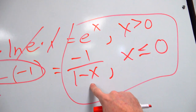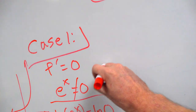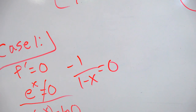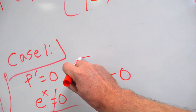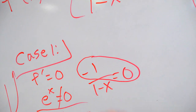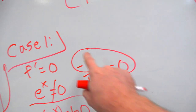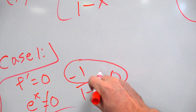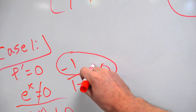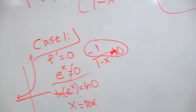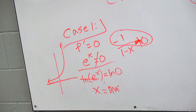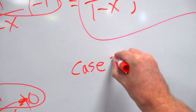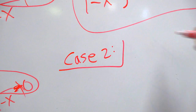Now let's check the other one. Can negative 1 over (1 minus x) ever equal 0? When do fractions in math equal 0? Only when the top equals 0. The bottom can't even be 0. Does the top equal 0? Negative 1 does not equal 0. So for the first time ever, we got nothing from Case 1 at all — total dead end. But you've got to check, because sometimes you get something from Case 1 in a piecewise function.